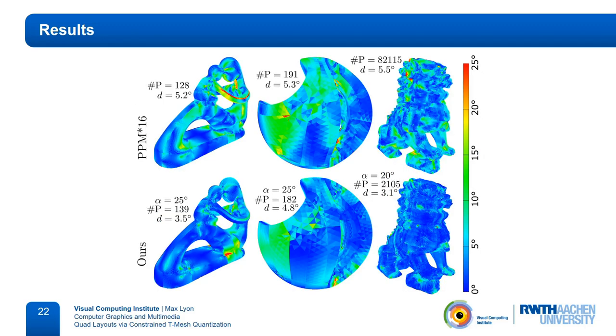Here we compare the quality of the resulting integer grid parameterization with those of Pietroni and colleagues. The color shows the angular difference per triangle between the final parameterization and a given cross field that specifies the intended directions. With d-bar, we state the average of these deviations over the whole mesh. We can see that with a similar number of patches, we achieve less deviation. The reason the number of patches is so large for the top right model, is that the original result of Pietroni contains t-junctions, which we extended until the layout was conforming.